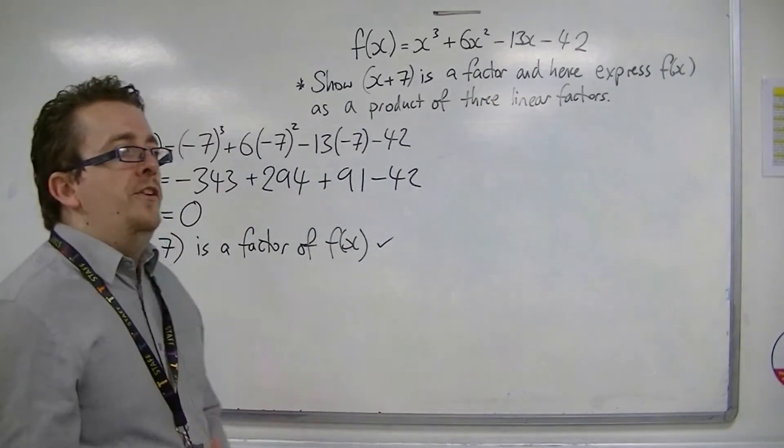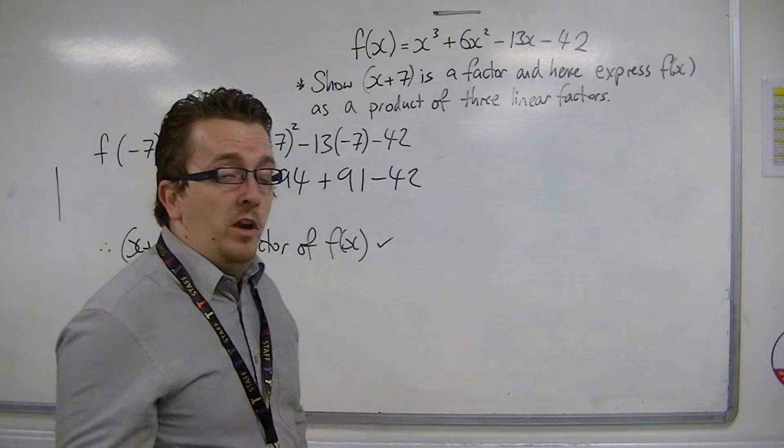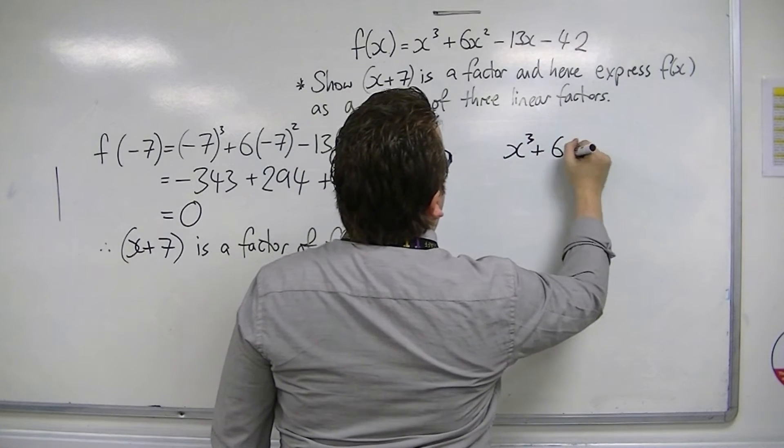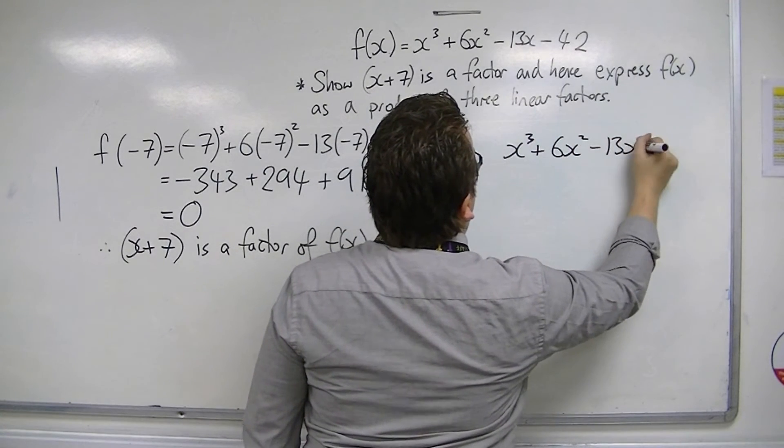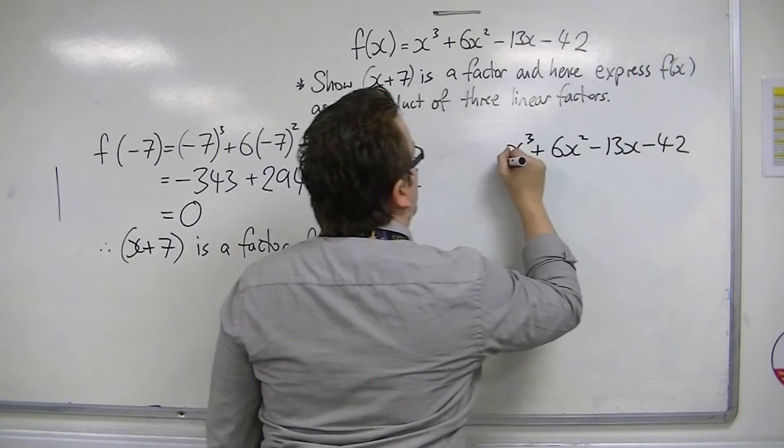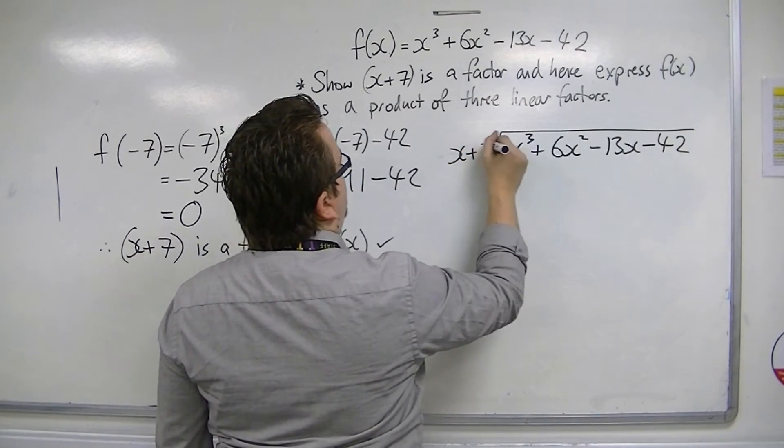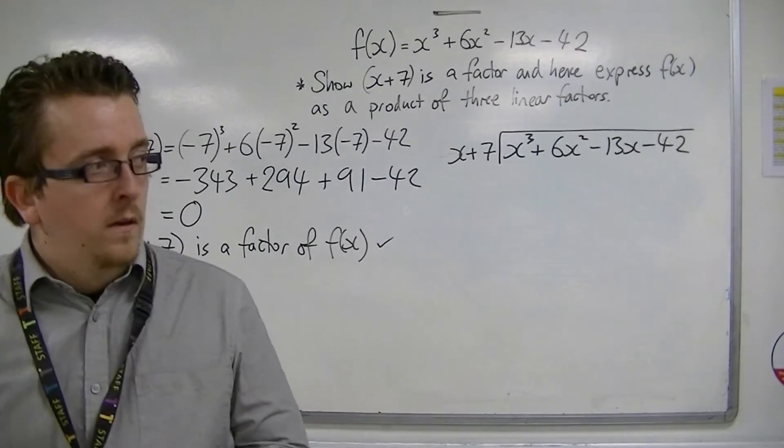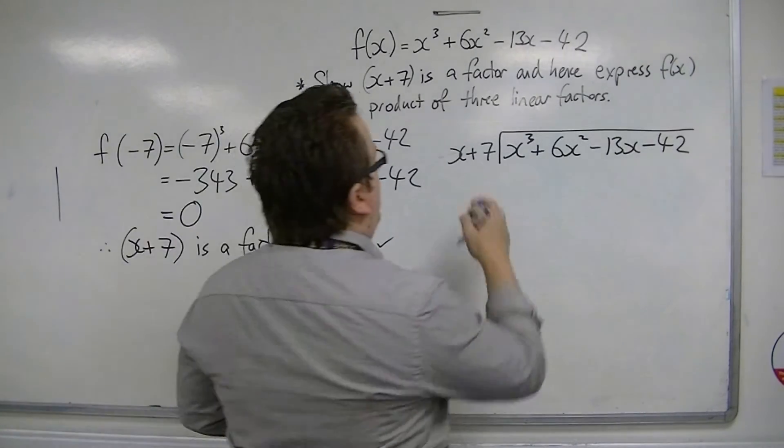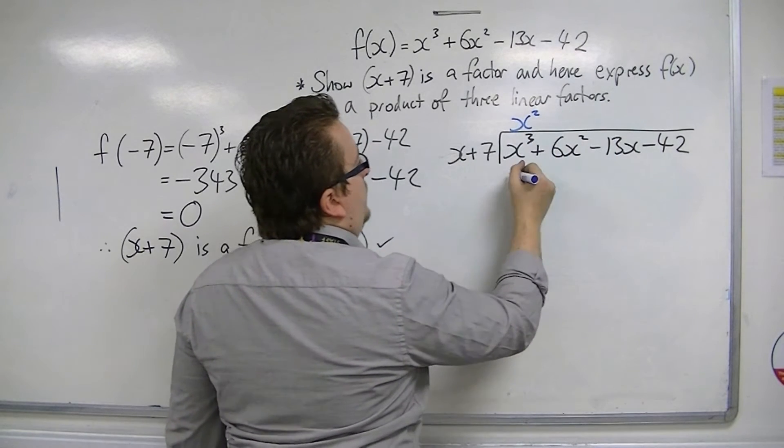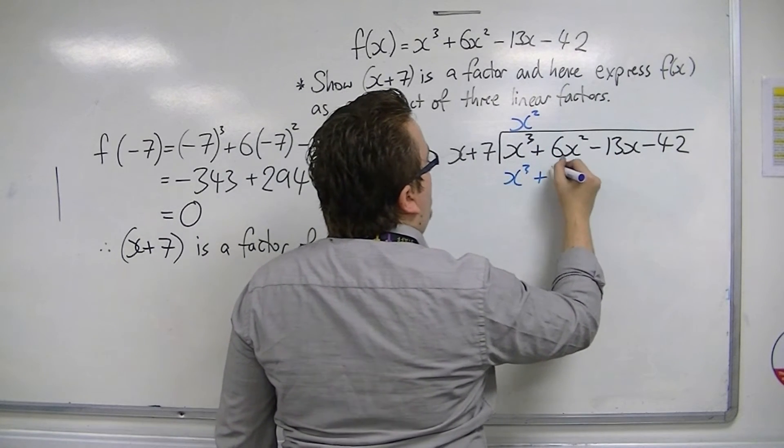Now in order to do that, we're going to have to use polynomial division. So x cubed plus 6x squared minus 13x minus 42 divided by x plus 7. So we do x's into x cubed is x squared. x squared times these two terms is x cubed plus 7x squared.